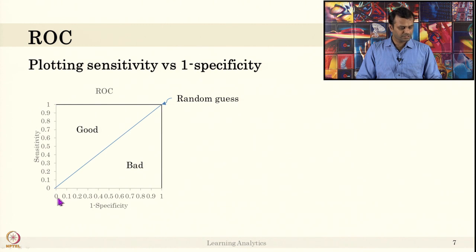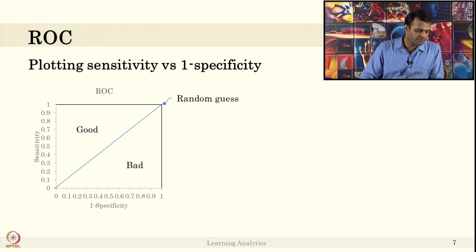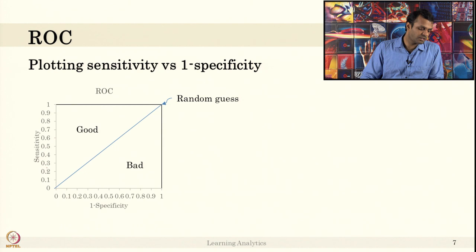Consider this plot with values from 0 to 1 on both axes. If a classifier has very good specificity — say specificity equals 1 — then 1 minus 1 equals 0, placing it at 0 on the x-axis. If sensitivity (recall rate) is also very low, the value will be near the origin. This is not a good score.